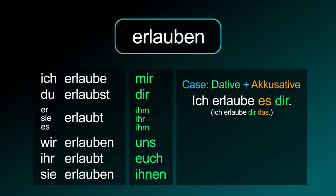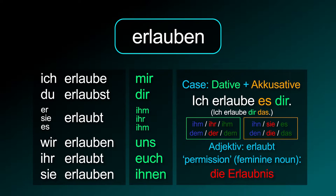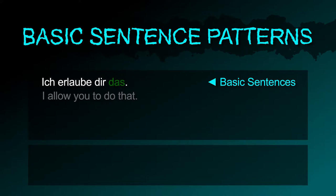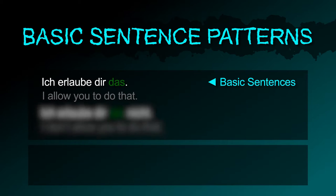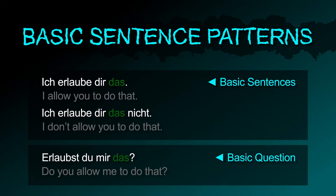Use the correct article or personal pronoun depending on the person's and the noun's gender. The adjective is erlaubt. Basic sentences: ich erlaube dir das. Ich erlaube dir das nicht. Basic question: erlaubst du mir das?